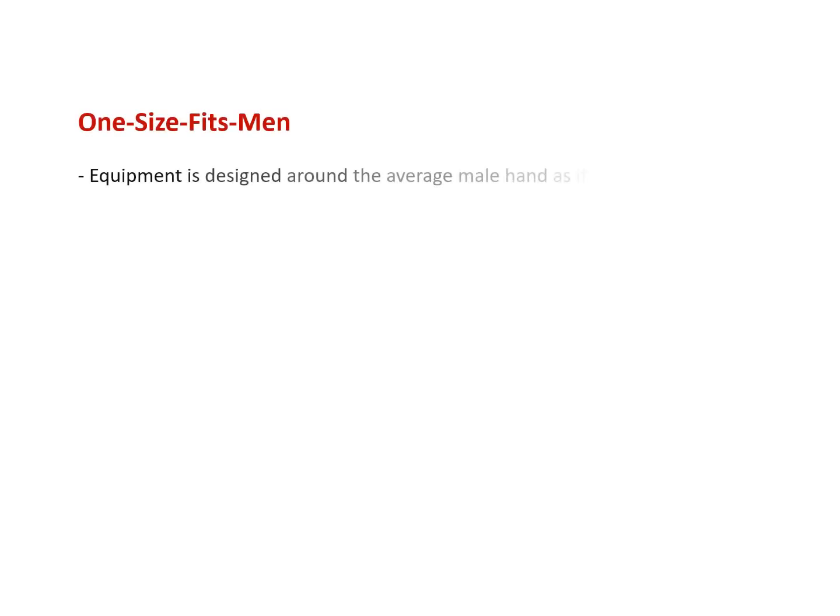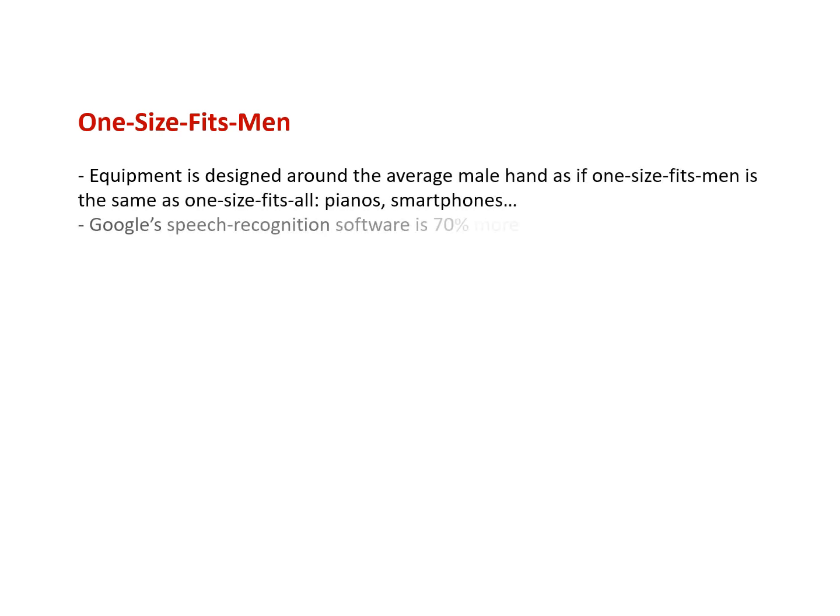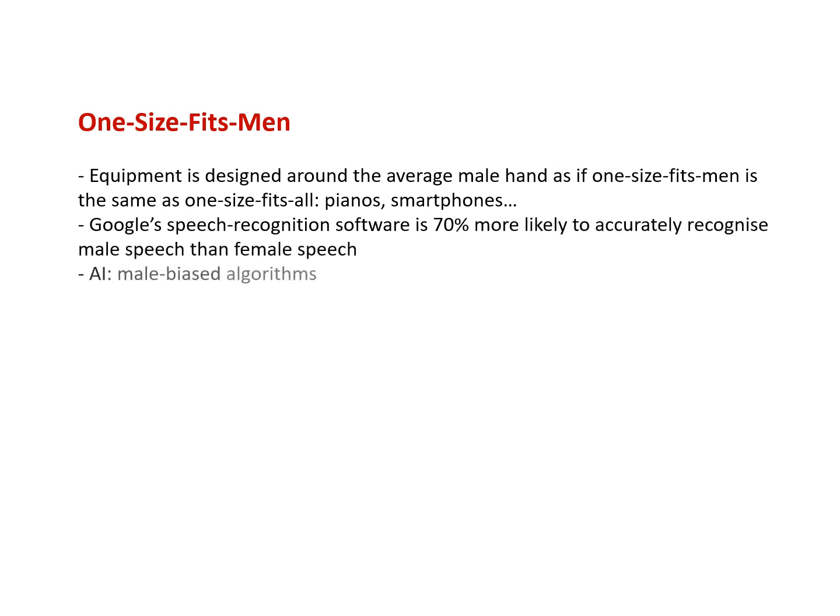Different sorts of equipment — from certain musical instruments like pianos to smartphones — are all designed around the average male hand, as if this size fits all. Google speech recognition software is 70% more likely to accurately recognize male speech than female speech, and artificial intelligence algorithms are male-biased in their design. There are many more examples in this book of how research about society and the place of women can be leveraged in feminist politics. This is the end of this lecture. Thank you.